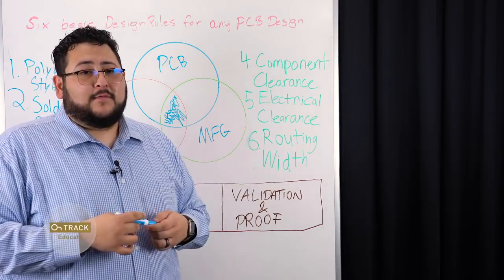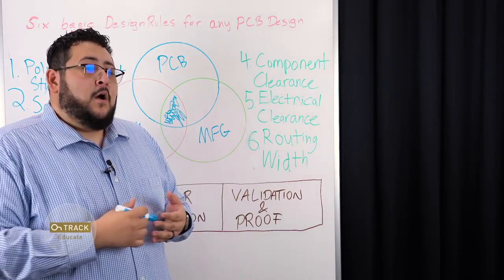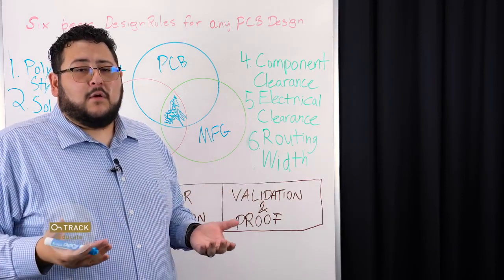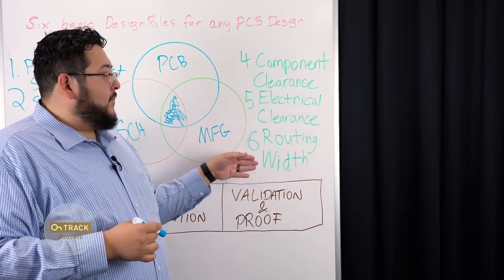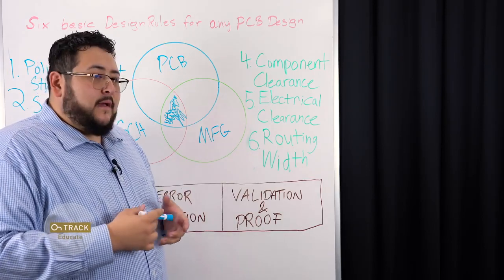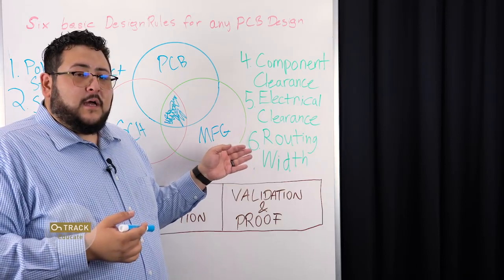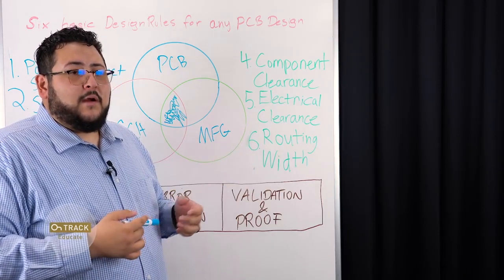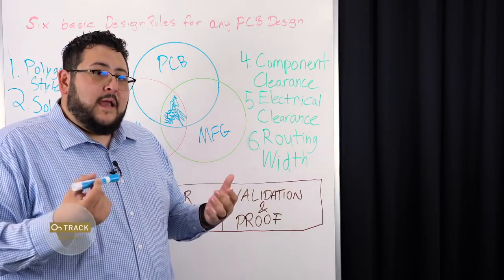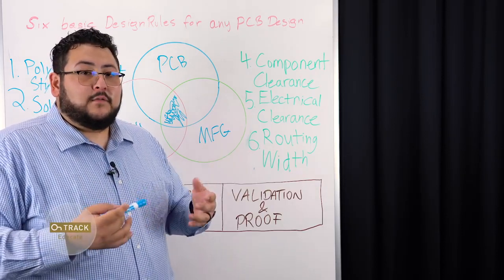Lastly, the width of your routes is very important to ensure that everything is as it needs to be. Are your power routes a sufficient size to carry the current that you need? If you don't have this information it can be very detrimental. One of the nice advancements in the ECAD environment is that you can have characteristic impedance-controlled routing. You can have different impedance profiles to apply to these routing widths and make sure that everything is created in a manner that will be beneficial to you.